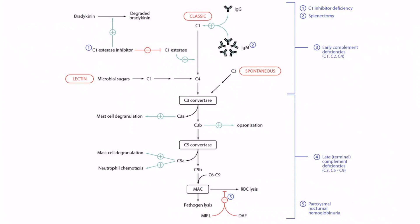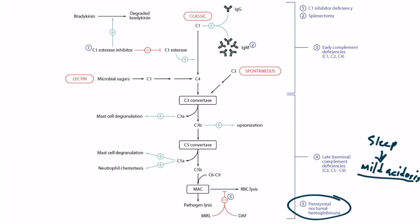Regarding PNH: when these patients sleep, their respiration decreases, causing their blood to experience a mild acidosis. This mild acidosis supposedly activates complement, leading to increased red blood cell lysis at night while the patient is asleep. So when they wake up, they get hemoglobinuria, or dark urine. Truthfully, these patients can have hemoglobinuria at any time of day, but this is where the name paroxysmal nocturnal hemoglobinuria comes from.